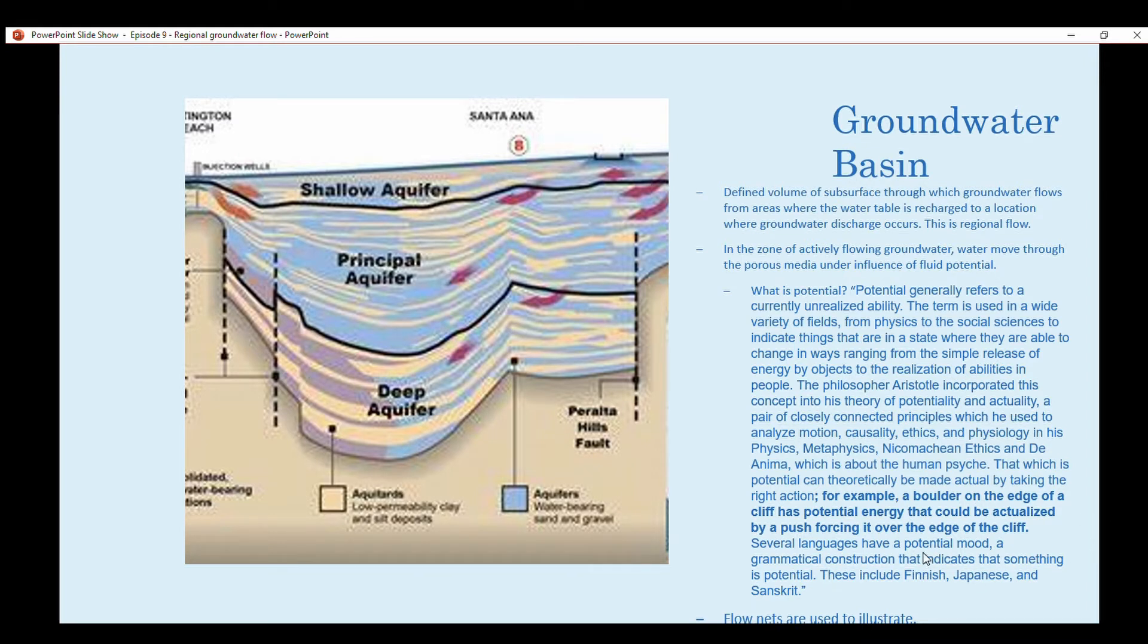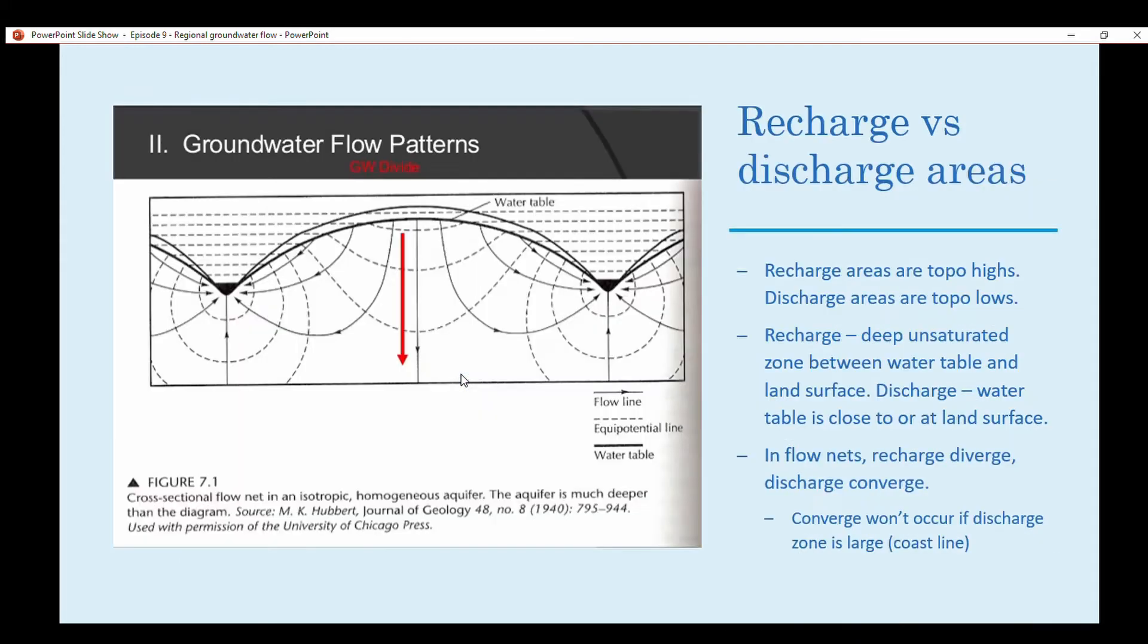Flow nets are used to describe regional flows. In terms of recharge versus discharge areas, recharge areas are typically topo highs, topographic highs like mountaintops and hills. And then discharge areas are topo lows, such as valleys. That's the best way to think about it.